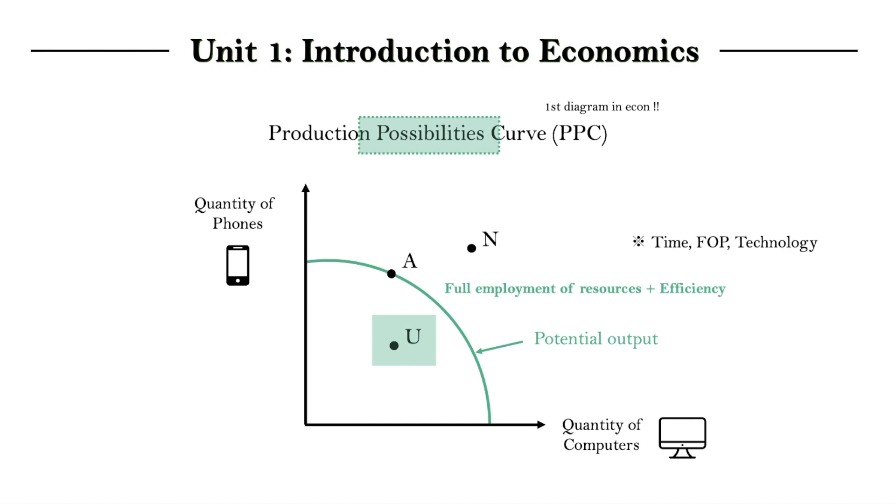So what about point N outside the curve? Well, since it's placed beyond what is possible shown by the curve, point N is unattainable with our fixed amount of resources and at our current level of technology. We cannot possibly produce quantities of both goods at the level of point N. So let's discuss examples of being at both point U and N and any changes we may be able to experience.